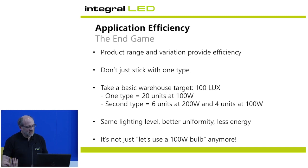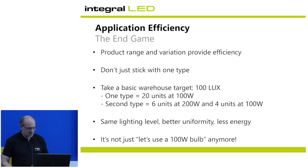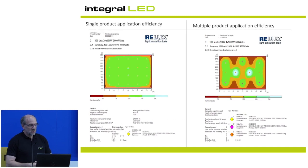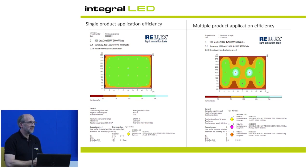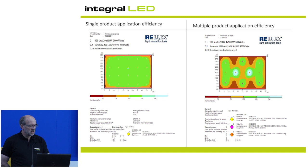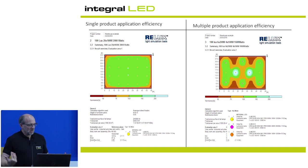But with application efficiency you can actually do more and continually improve energy efficiency. As an example, I took a basic warehouse targeting 100 lux. For a simple calculation I used 20 products at 100 watts, but by looking at the scheme more closely I could use 16 products with a mixture of wattages. We tend to look for an easy life in lighting design — just changing to LED saves energy, but is it the most energy you can save? By mixing up the wattages and beam angles you can actually save more energy.